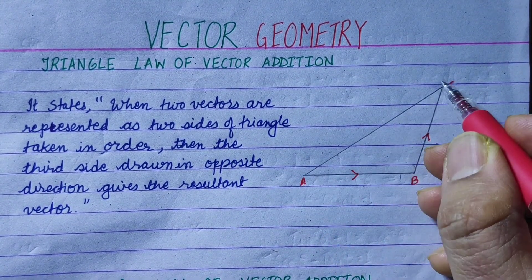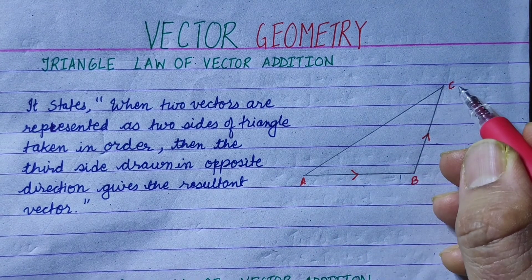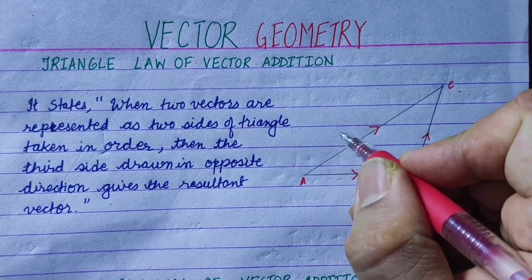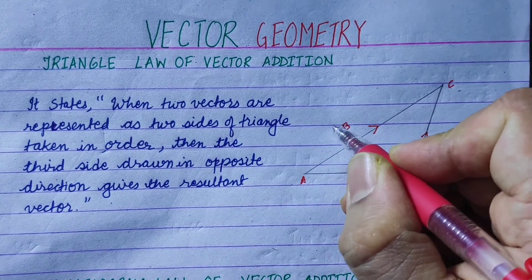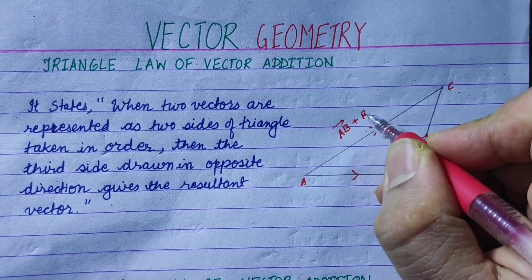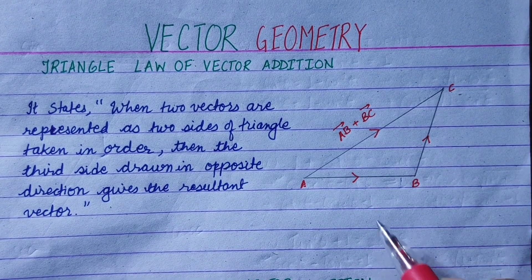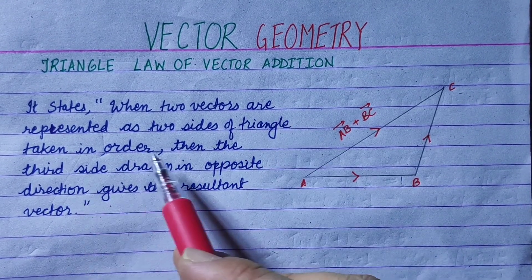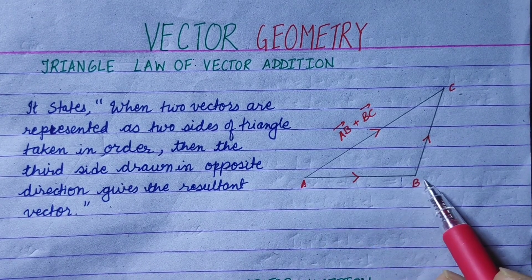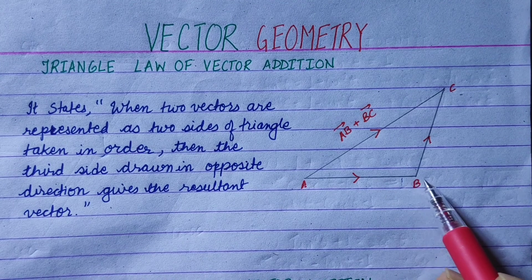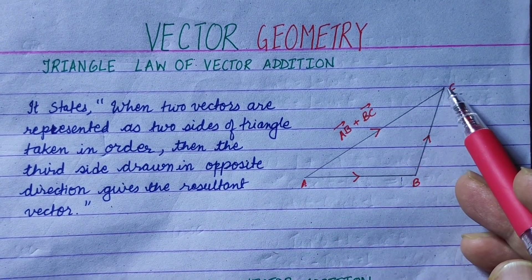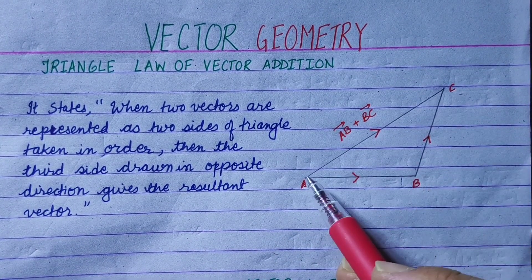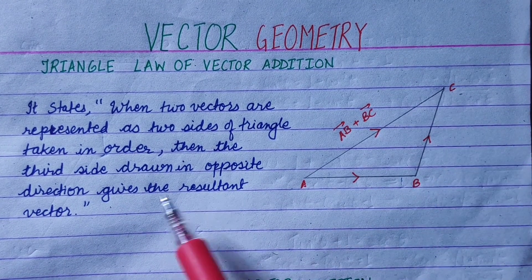Now, the third side — from the initial point to the terminal point — will be the third side. That will point to the end of the triangle, which is AC. This is the stage when two vectors are represented as two sides of a triangle taken in order, and the third side drawn in the opposite direction gives the resultant vector.